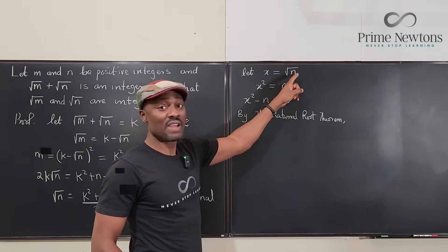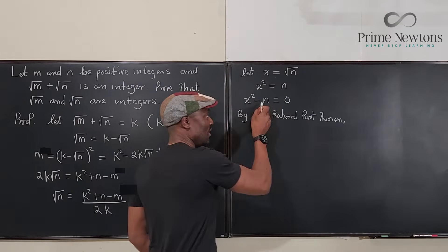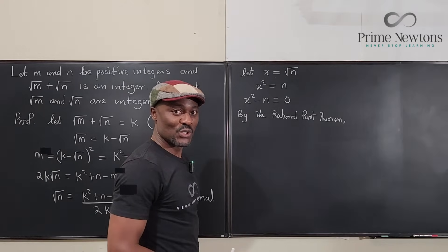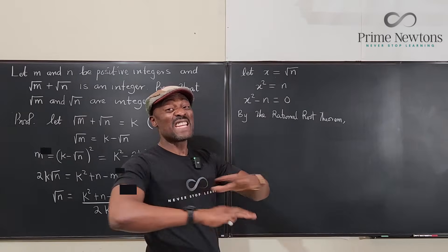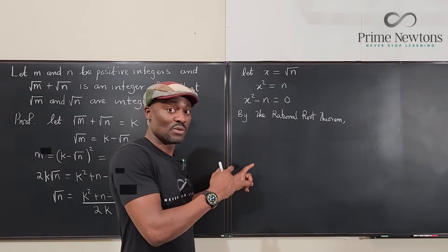x = √n is a solution to this polynomial. So according to the rational root theorem, if you have any rational solution, it must follow this rule.